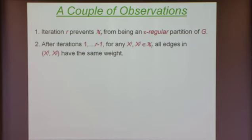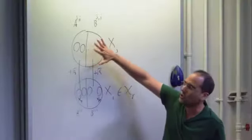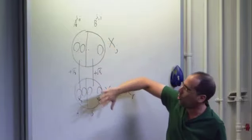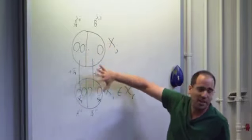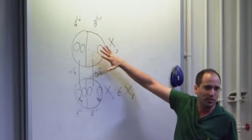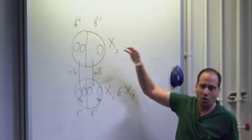If you disregard what happens at iteration r and later — if you take two clusters X_i and X_j in X_r and suppose I stopped after r minus one iterations — then this bipartite graph is completely uniform: all the edges between X_i and X_j have exactly the same weight. Only in iteration r do I suddenly introduce some discrepancy between two subsets in X_i and X_j.